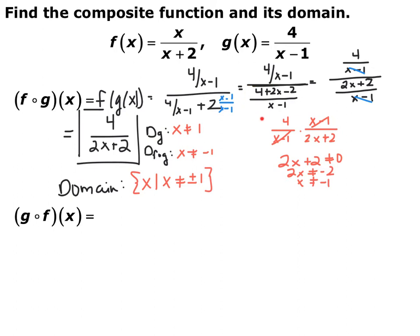The denominator becomes 4 plus 2x minus 2 over x minus 1 — make sure you distribute that 2. Simplified, you get 4 over x minus 1 divided by 2x plus 2 over x minus 1. Whenever you have a fraction divided by a fraction with the same denominators, those denominators cancel. Using keep-flip-change, one ends up in the denominator and one in the numerator, so they cancel. You end up with 4 over 2x plus 2. This is your composite function f composed with g.